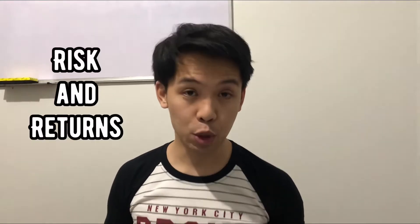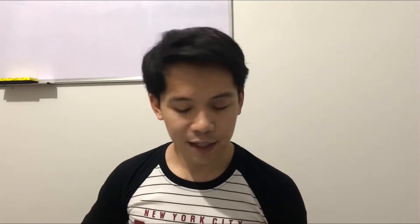The Capital Asset Pricing Model is about the relationship between risk and returns. To appreciate what we are going to discuss, let us first visualize what risk means by referring to the following diagram. In this diagram, we have the stock price in the y-axis and the time period in the x-axis. The apple green line represents the expected stock price after a period of time. Note that as time passes, the higher the stock price is expected to be. Hence, it is expected that there would be returns.